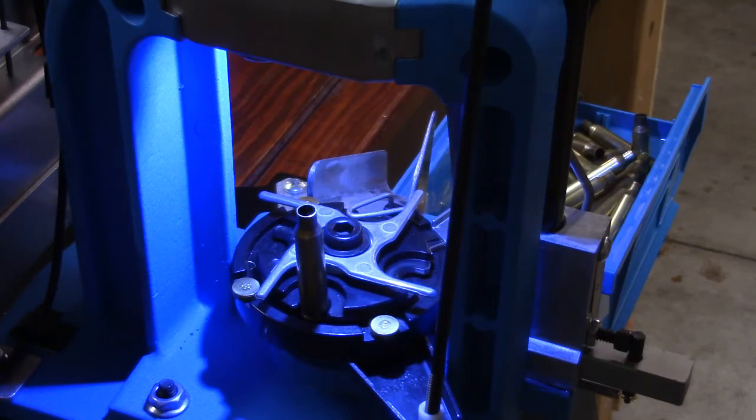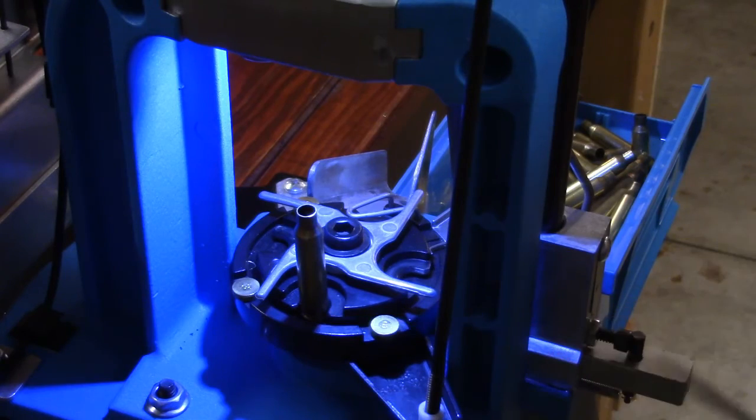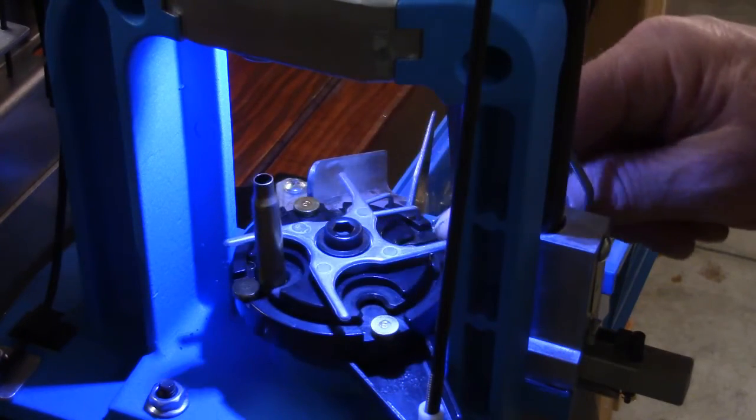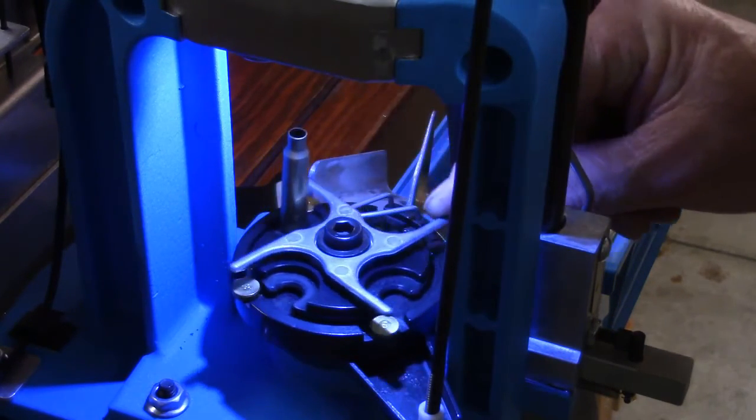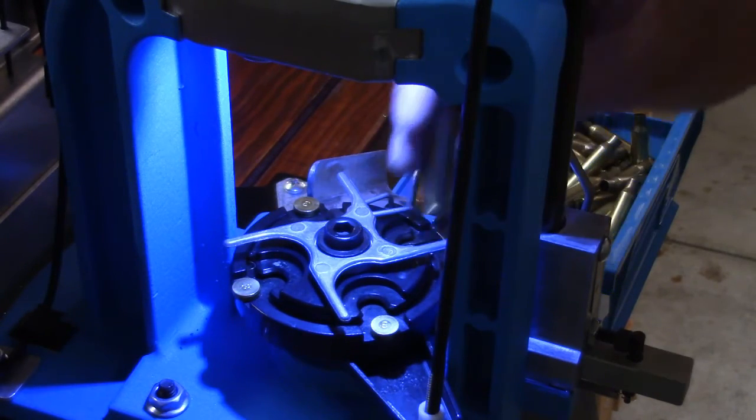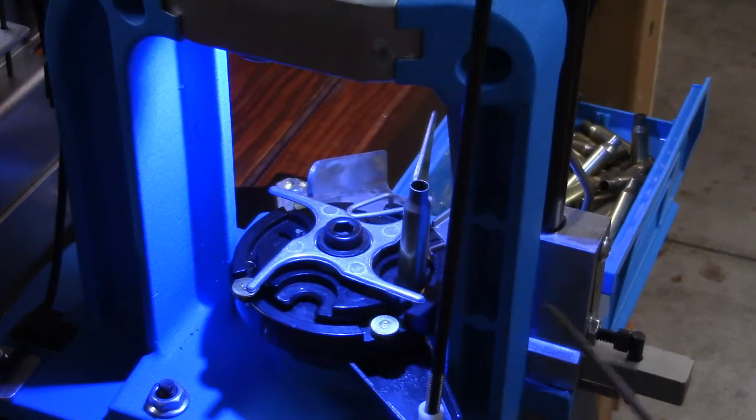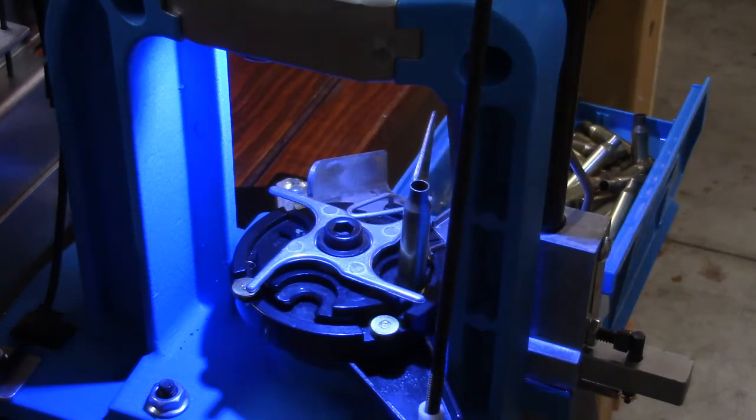We have a raised lip all the way around the entire diameter of the platform until we are ready to eject. What this means is it is impossible for that cartridge case to fall off of there.